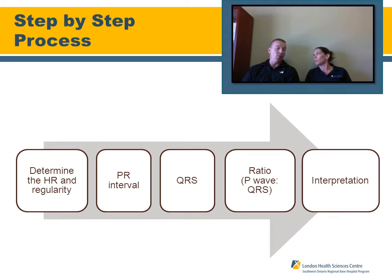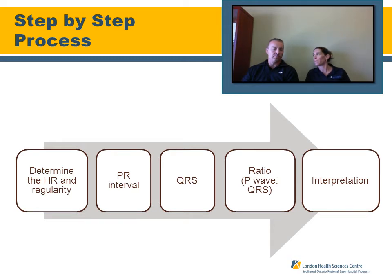Reviewing the step-by-step process for a Lead 2 ECG strip: first, determine the heart rate and its regularity. Then determine the PR interval — it should be between three and five small boxes, or 120 to 200 milliseconds. Next, look at the QRS complex and determine its width — narrow is less than three small boxes, wide is greater than three small boxes, or 120 milliseconds.